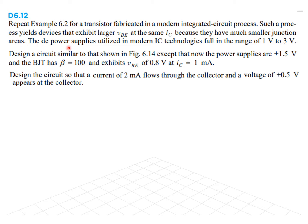Here, in the first part it has been told that because of the modern integrated circuit, the voltage required is now reduced from 10 or 12 volt to between 1 and 3 volt. The question starts from here: design a circuit similar to that shown in figure 6.14. Now this we have done, example 6.2, same circuit, except that now the power supplies are 1.5 volt and the BJT has a beta of 100.